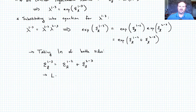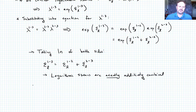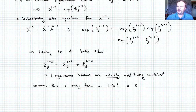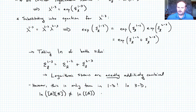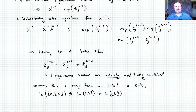Taking the natural log of both sides, we get that the logarithmic strain from 1 to 3 is exactly the sum of the logarithmic strain from 1 to 2 plus the logarithmic strain from 2 to 3. The logarithmic strains are exactly additively combined. I want to caveat this by saying this only works in 1D. In 3D, we end up with a product that requires us to take the natural log of two matrices A times B, and in 3D that's not the same as the natural log of A plus the natural log of B. So this exact additive decomposition for the logarithmic strain only works in 1D.